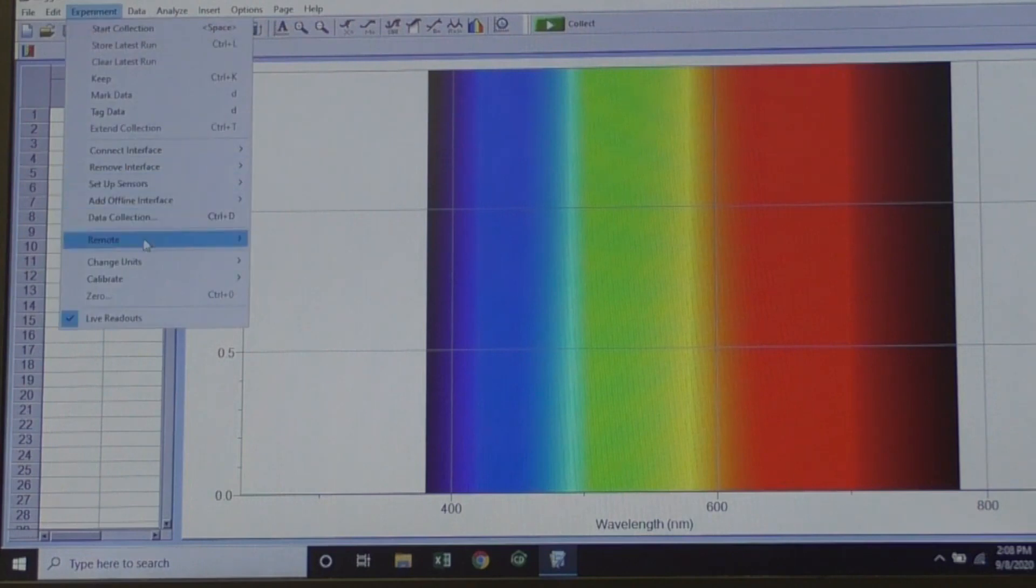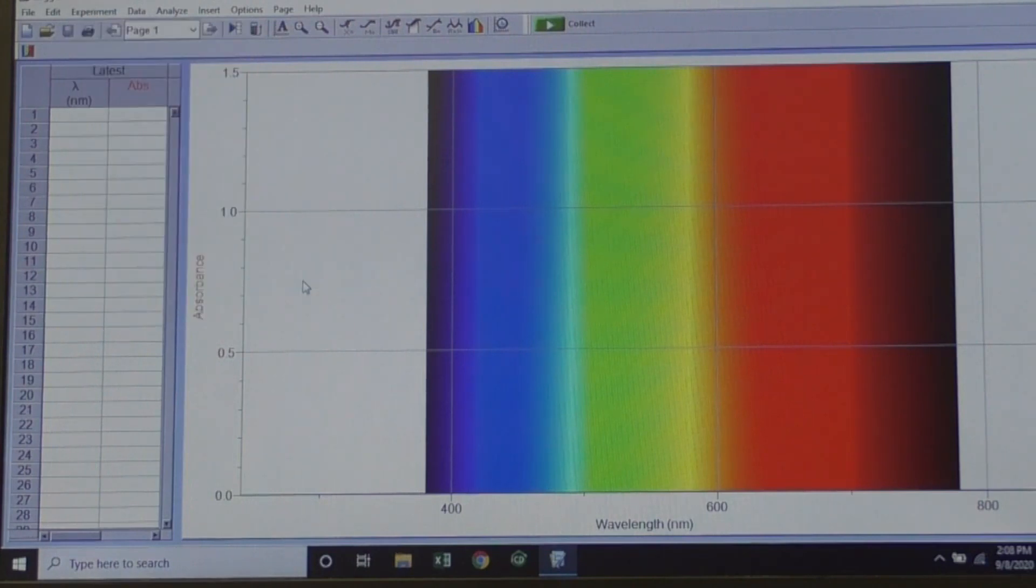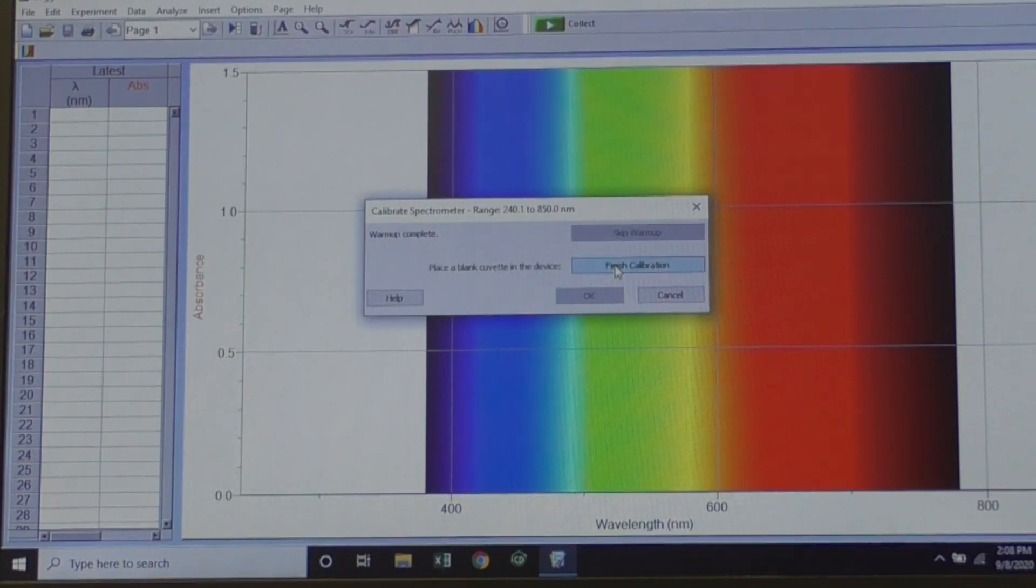Click Experiment, Calibrate, Spectrometer 1. The spectrometers are left on all day, so choose Skip Warm-up, Finish Calibration, and then OK or Done.